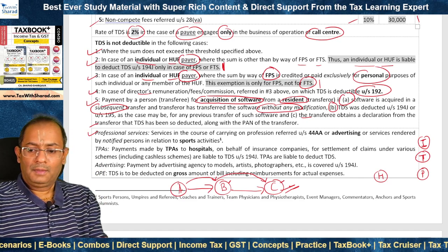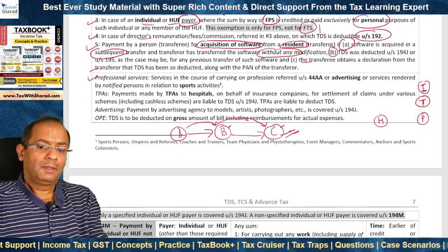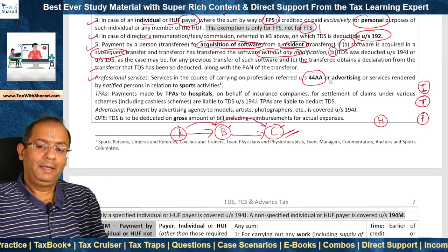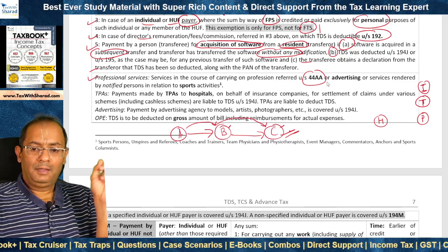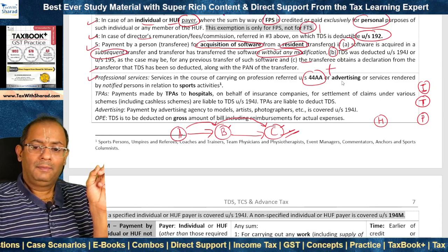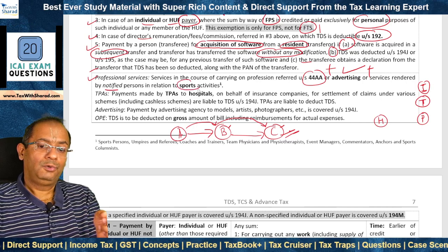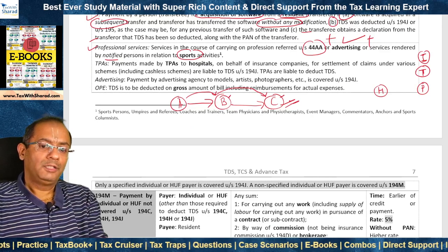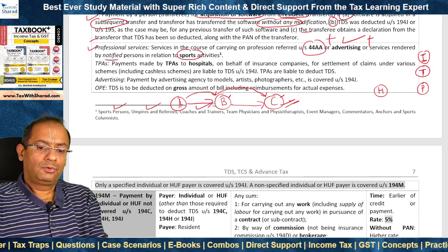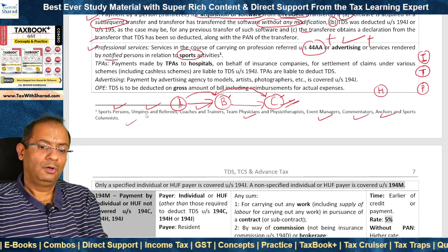Professional services under section 194J means services in the course of carrying on a profession referred to under section 44AA, plus advertising, plus services rendered by notified persons in relation to sports activities. The notified persons include sports persons, umpires and referees, coaches and trainers, team physicians and physiotherapists, event managers, commentators, anchors and sports columnists.